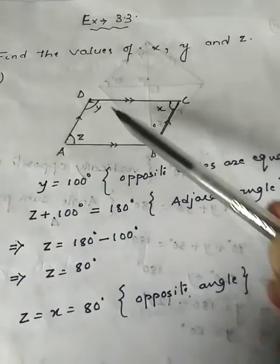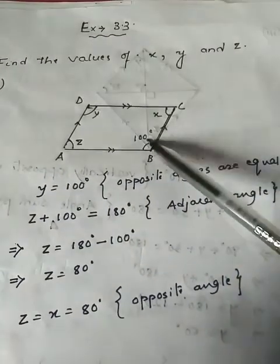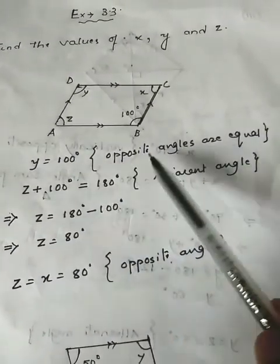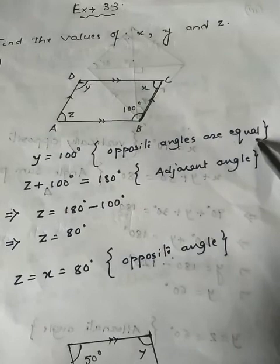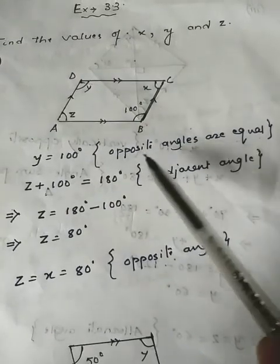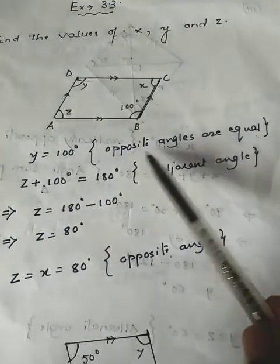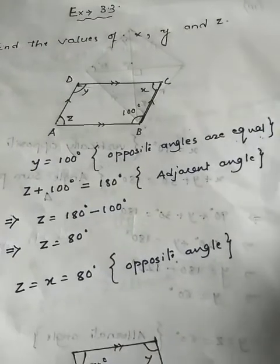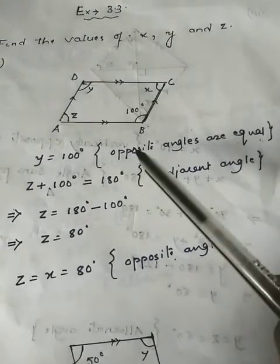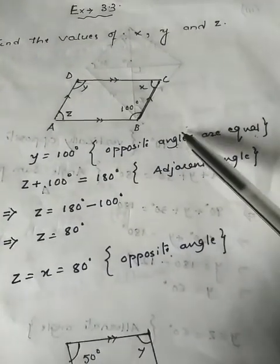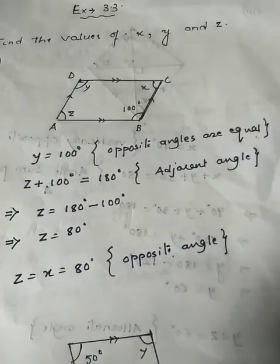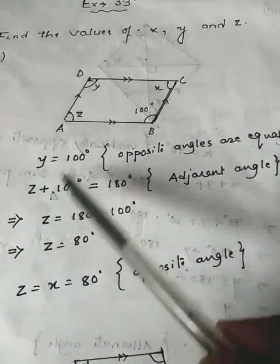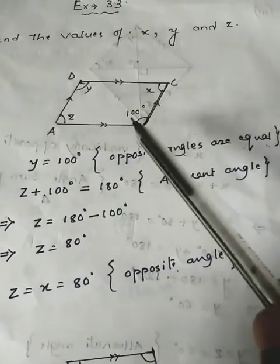For the first figure, y is opposite to 100 degrees, so y equals 100 degrees because opposite angles of a parallelogram are equal. Always give the reason — if you don't give the reason, you will not get full marks. The reason is extremely important in geometry.